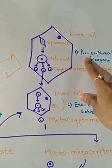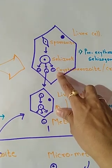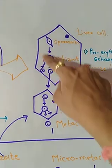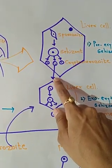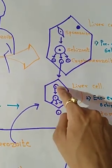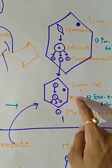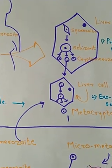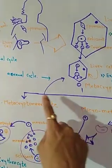During schizogony, the nucleus divides, takes cytoplasm, and forms the asexual reproduction products. After leaving one liver cell, the cryptomerozoite enters another liver cell and goes through the same process again. The merozoite formed the second time is called the metacryptomerozoite, and this metacryptomerozoite again divides into two parts.